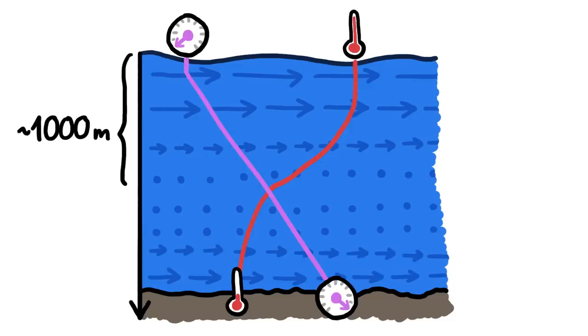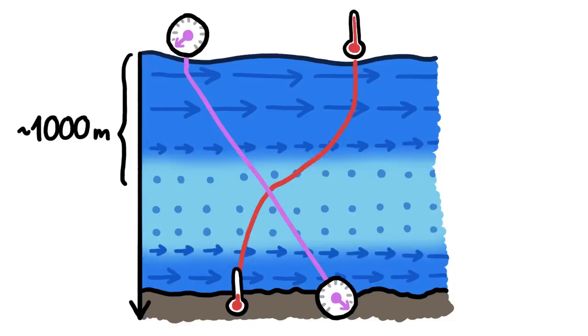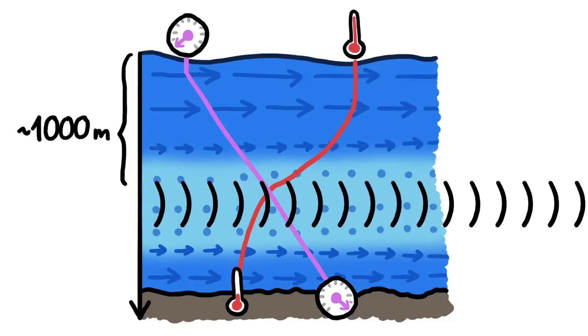But here's where it gets weird, because that layer of the ocean where the speed of sound is slowest is where sounds can travel the farthest.